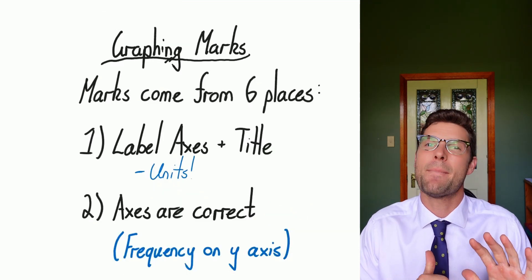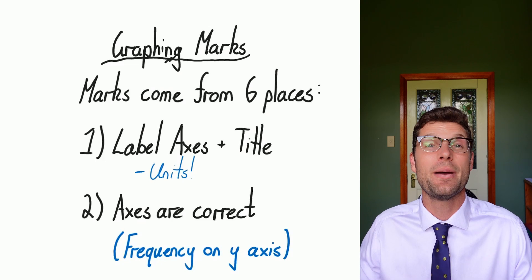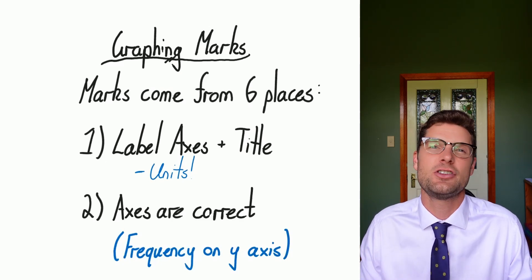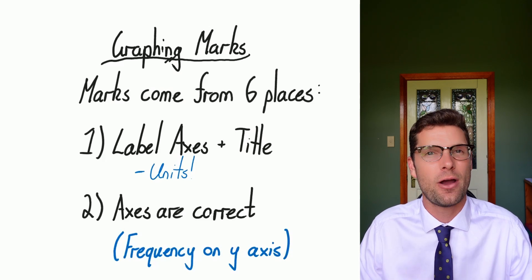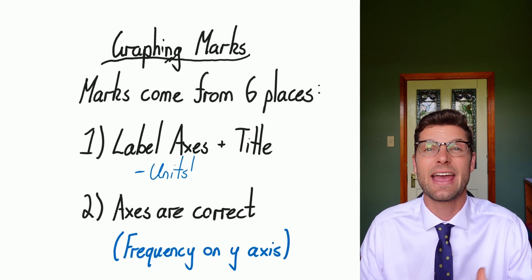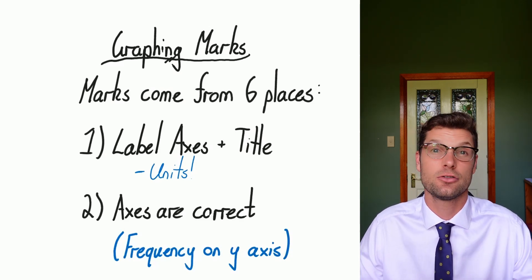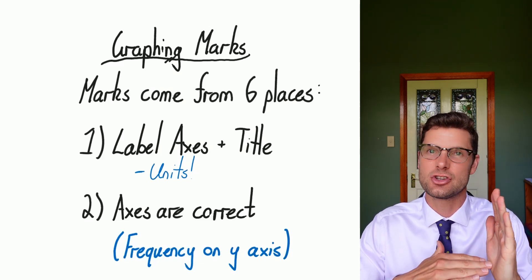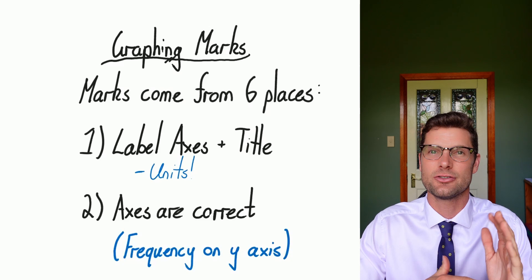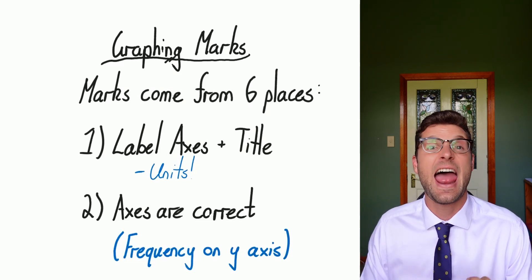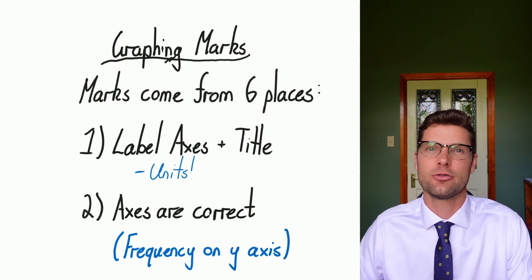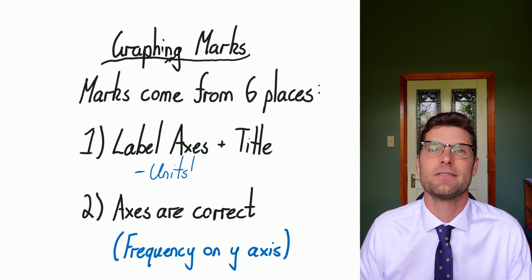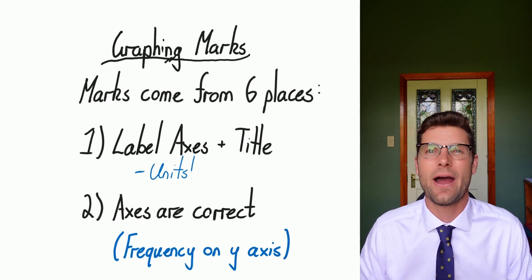When you are making graphs, you get marks from six places. Only one of those marks is actually about doing it correctly — the rest is making sure it's set out well so you can really communicate what the data is saying to the audience. The first one is that you have to label the two axes — the vertical and horizontal — and put the units in. You also have to write a title so that someone could quickly look at the graph and know exactly what we're talking about. Those two things straight away get you a mark.